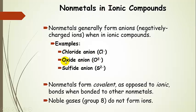Oxide, so this is oxygen, gains 2 extra electrons. Oxide anion. The sulfide anion, so this is sulfur, gains 2 extra electrons. And just to remind you, nonmetals form covalent as opposed to ionic bonds when they're bonded to other nonmetals.